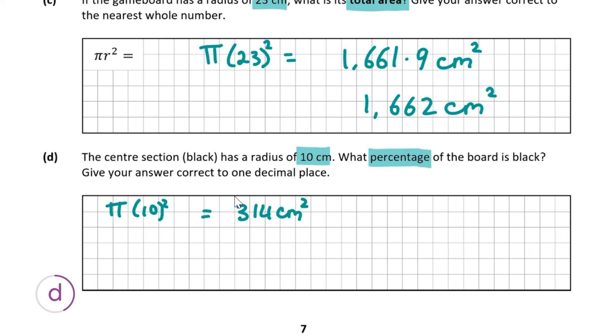To find this as a percentage of the whole board, we're going to divide it by the area of the whole board, 1662 centimeters squared, then multiply by 100 to get the percentage.